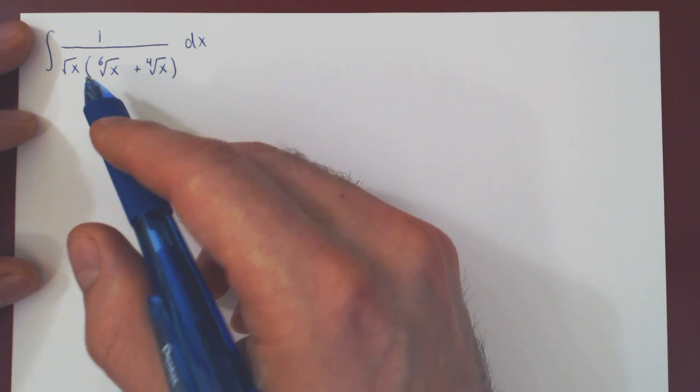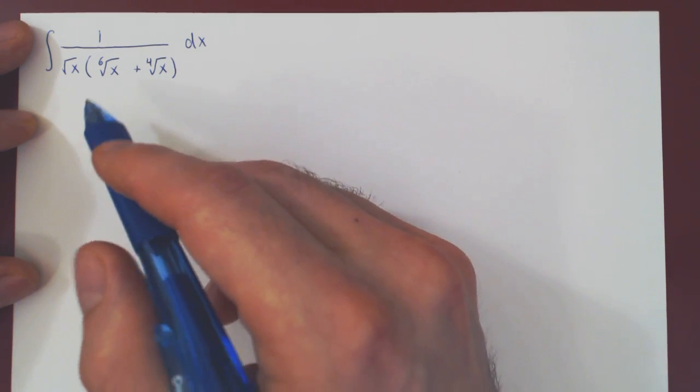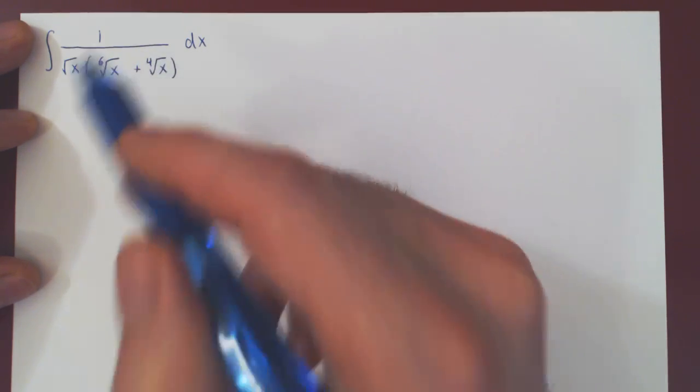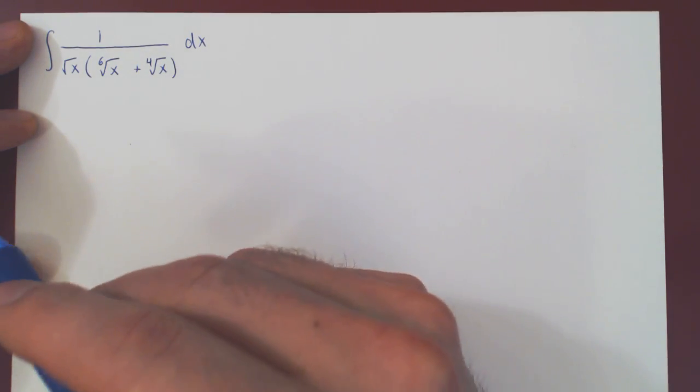So the idea is by making a proper substitution we want to eliminate these fractional powers of x and then obtain the integral of a rational function.